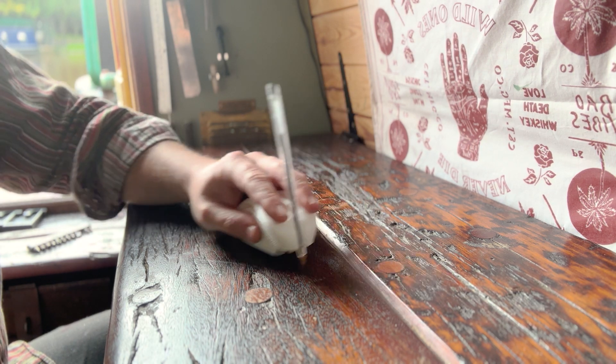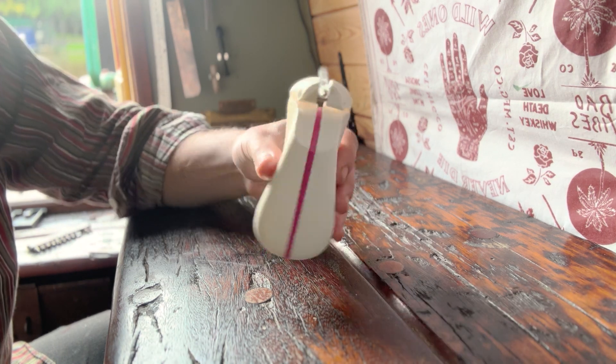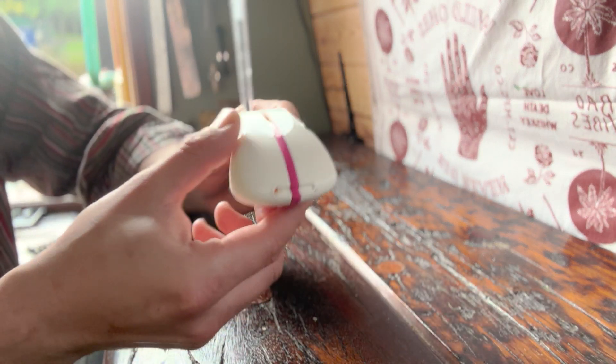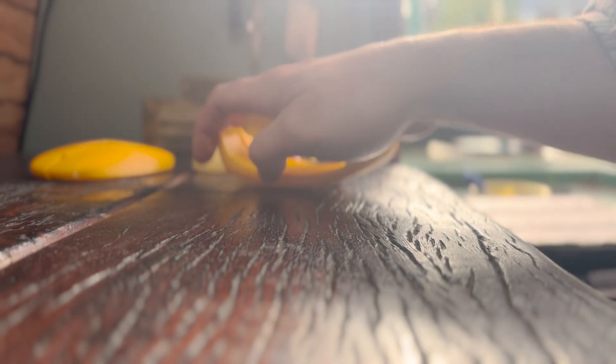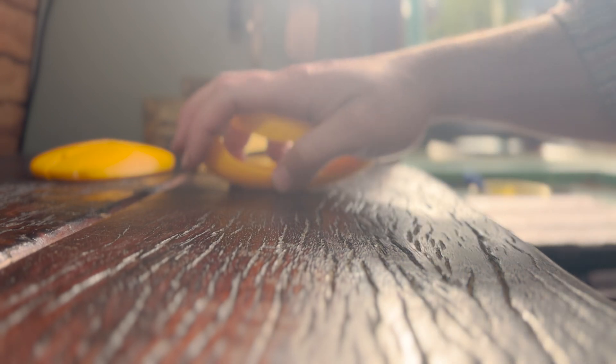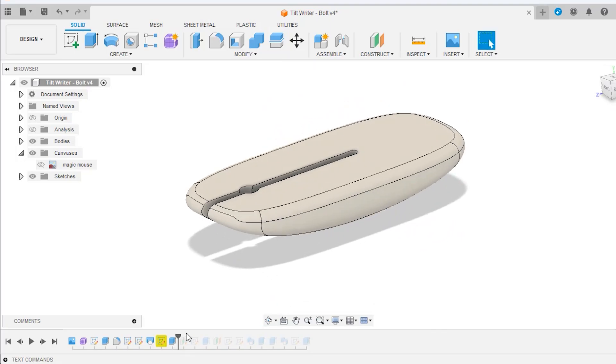Rather than making changes to something I'm already happy with, I decided to take a side step and explore a completely different design based on a single form with no assembly required. As I was messing around with my previous prototypes, there was an interesting moment where I inverted the mouse and experimented with a tilting action. This sparked the idea for a new design, so I jumped back into CAD to mock it up and see if it would work.